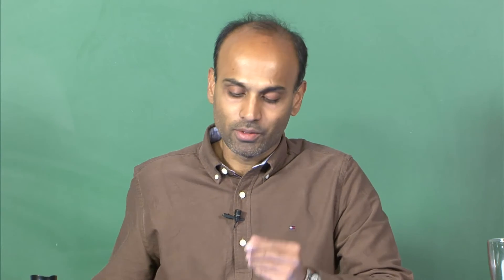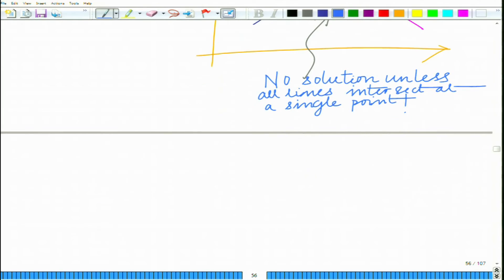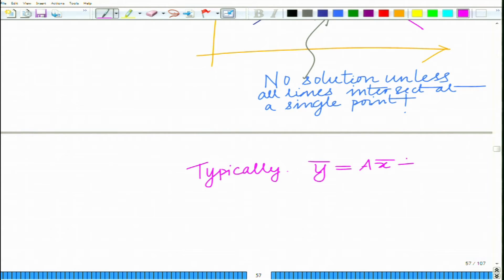In such a scenario, you will have to find an approximate solution — some solution that best fits the model or best explains the observed vector y. This is also known as the maximum likelihood vector x. This happens because of the noise in the model: y-bar equals A times x-bar plus n-bar.